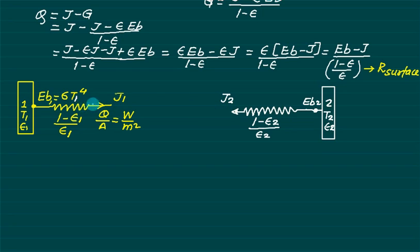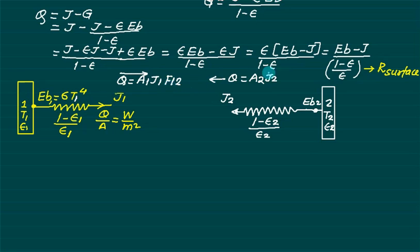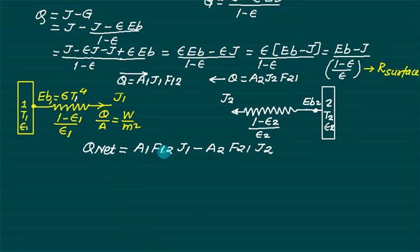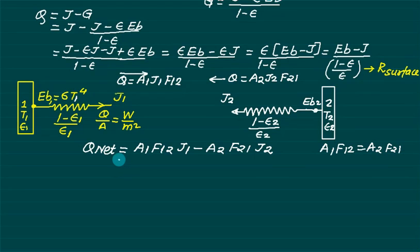The radiation from body 1 reaching body 2 is governed by the shape factor F12. The net radiation exchange between the two bodies is: Q = A1·J1·F12 − A2·J2·F21. By the reciprocity rule, A1·F12 = A2·F21, so we can factor this to get Q = A1·F12·(J1 − J2).